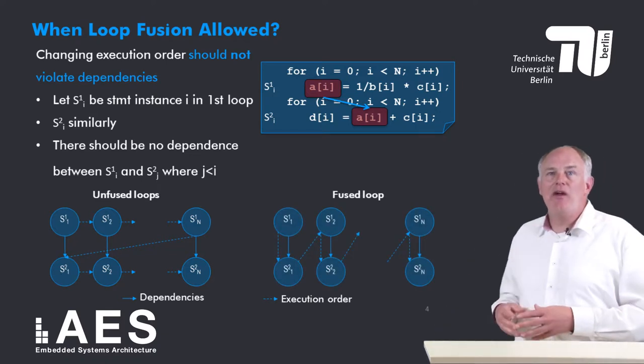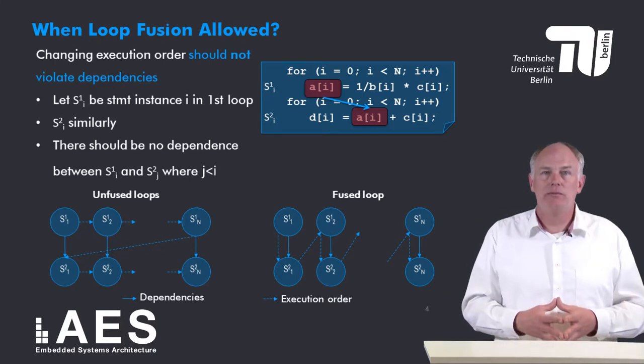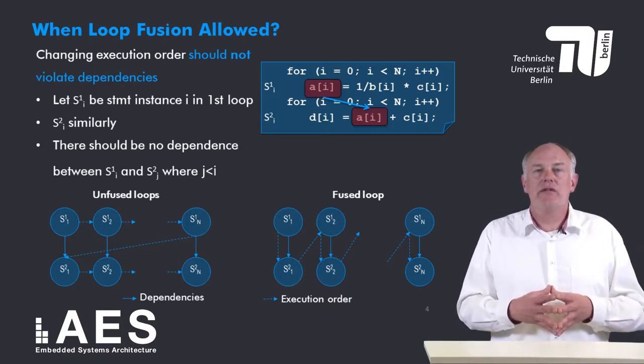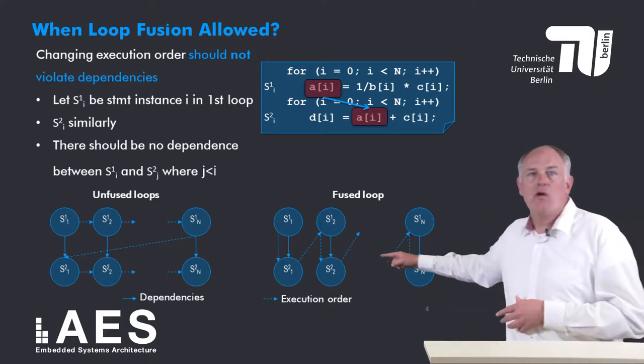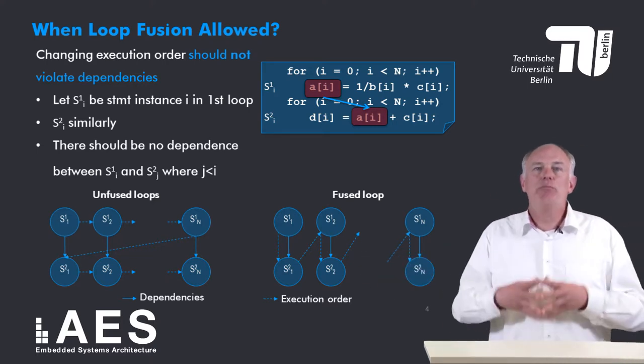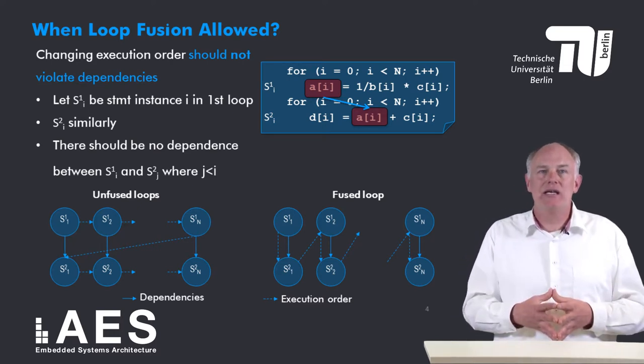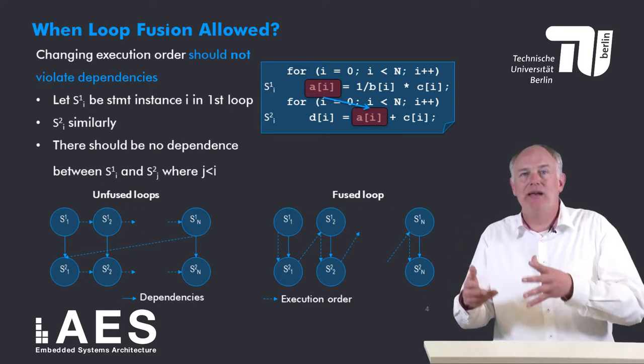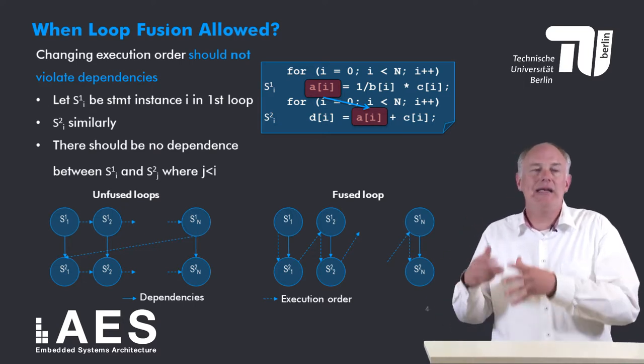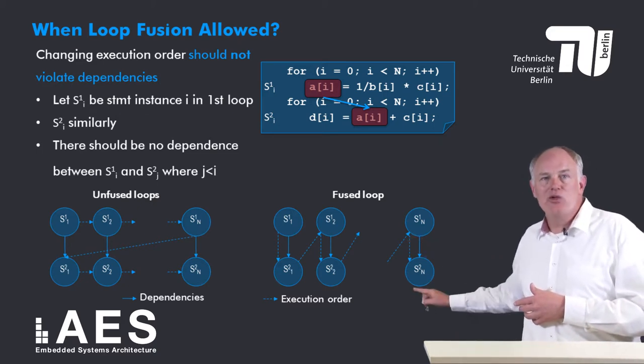This graph, on the other hand, represents the execution order of the fused loop. Now instances of statement S1 and S2 are executed alternately. But still, the execution order obeys all dependencies. S2[i] is data dependent on S1[i], and S1[i] is still executed before S2[i].